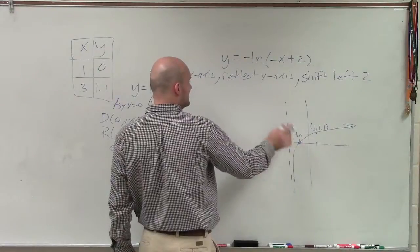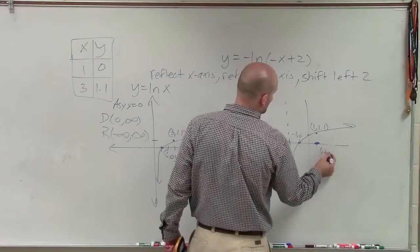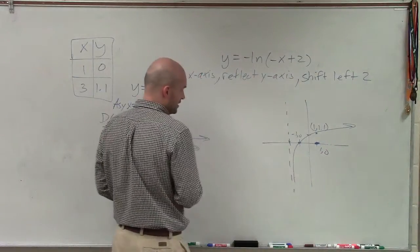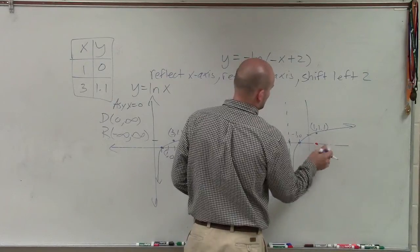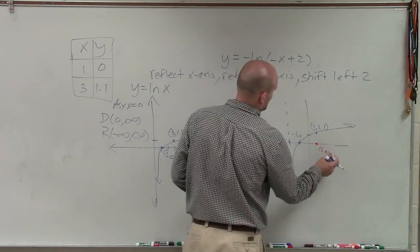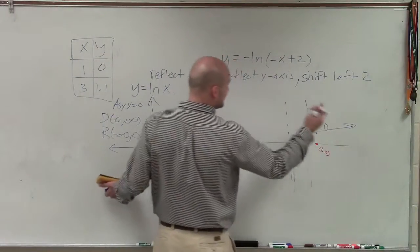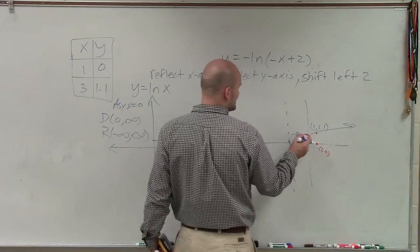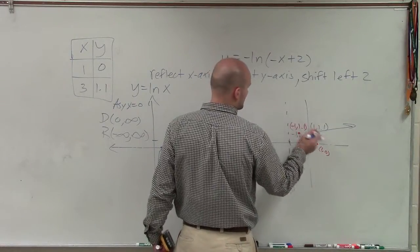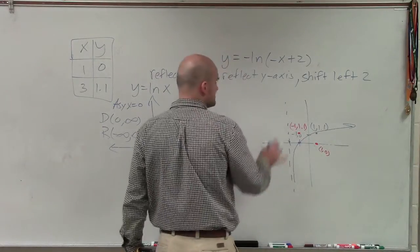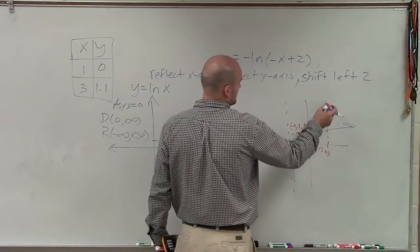I'm now going to take this graph and reflect it over my y axis. So again, at negative 1, reflected over the y axis, again, is going to take me back over to 1 comma 0. And let's actually do this in a different color. And then at 1 comma negative 1.1, if I reflect this over at y axis, now that's going to become negative 1 comma 1.1. And my asymptote, instead of being at negative 2, is going to now be at positive 2.